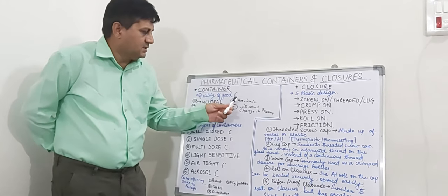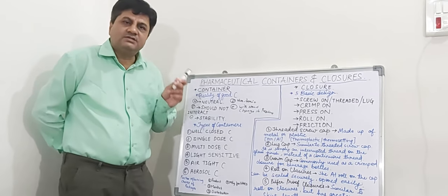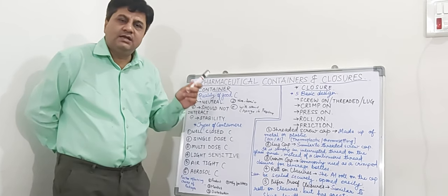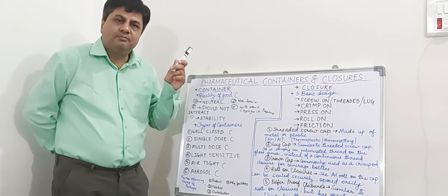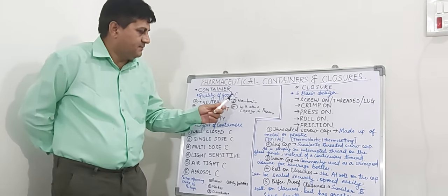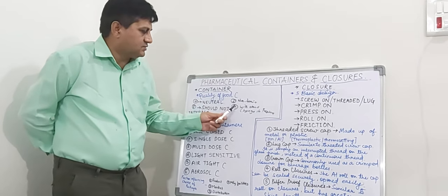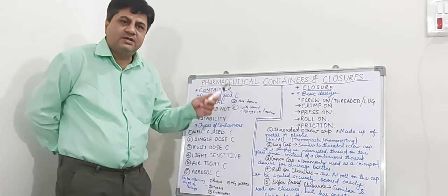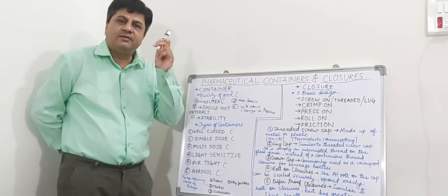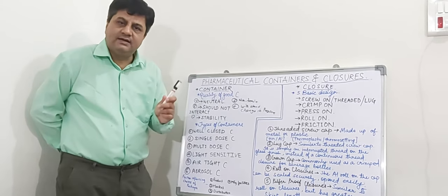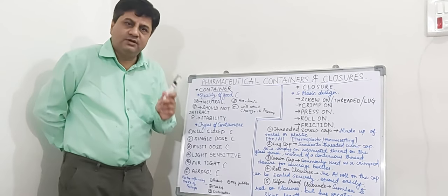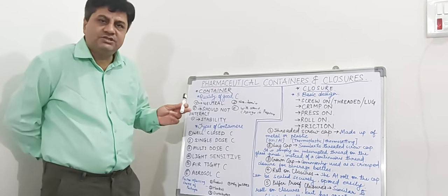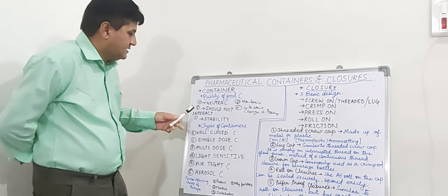The third quality is stability. The container must retain the stability of the pharmaceutical product. The fourth quality is that it must be non-toxic in nature — non-toxic, non-corrosive, and biodegradable. The last quality is that it must withstand changes in pressure or any type of environmental condition.